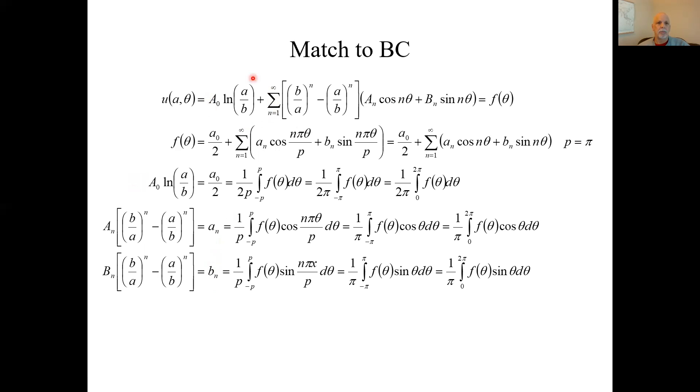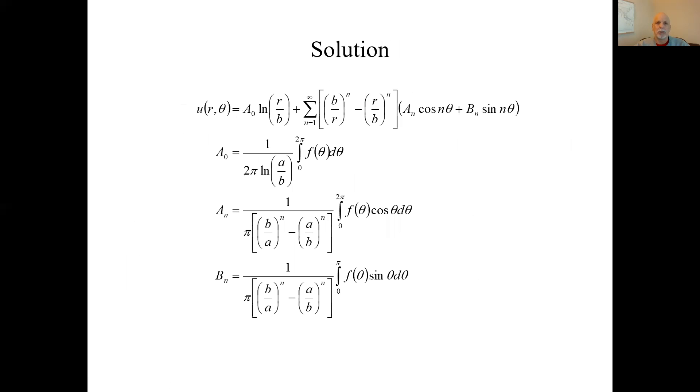This thing, big A sub 0, natural log of A over B, has this Fourier coefficient, little a₀ over 2, et cetera. D sub n times this whole mess equals this little a sub n. D sub n times that mess equals this little b sub n. Anyway, we match coefficients. That's kind of normal stuff. And this summarizes the solution. We had this already. Now we have formulas for the big A's and B's.